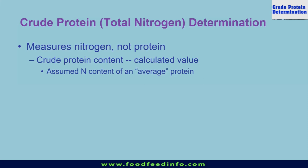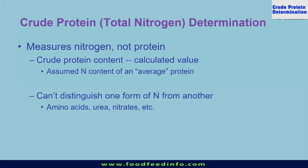That calculation is basically based on an assumption — the assumption is based on the average nitrogen content present in a feedstuff. So if we talk about the average nitrogen content, roughly protein contains 16% nitrogen. That's why when we are using this technique, we are not able to differentiate about the form of nitrogen.